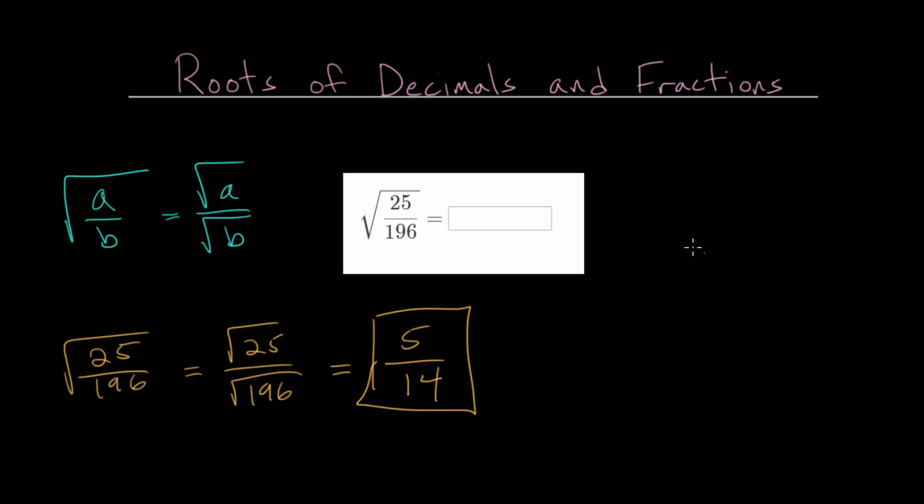But let's check it. And the checking process for these is fairly straightforward. All we're going to do is take our answer, what we think is the answer, and just multiply it by itself to see if we get back the number that was originally underneath the square root.